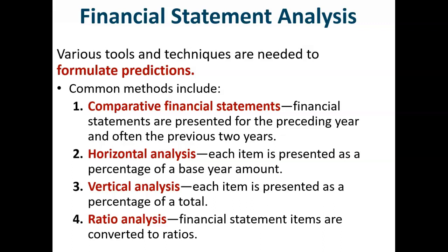In horizontal analysis, each item in the financial statement is expressed as a percentage of that same item in the financial statements of another year. The oldest year is usually the base amount. For example, comparing inventory this year to inventory last year would provide the percentage change in inventory.